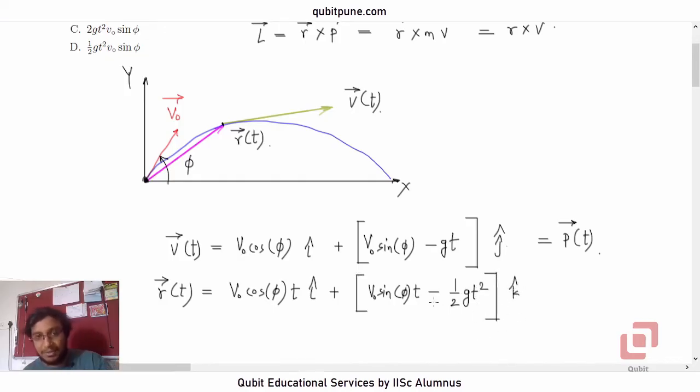Again, the same simple equations of motion for uniformly accelerated motion. Here we use V is equal to u plus a t for the velocity. And here we use S is equal to ut plus half a t squared for displacement.